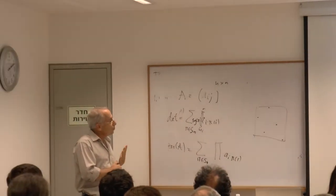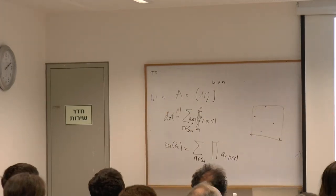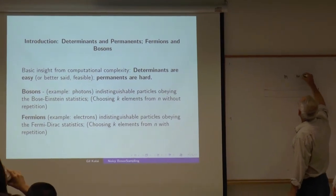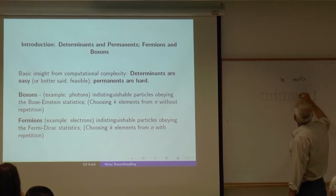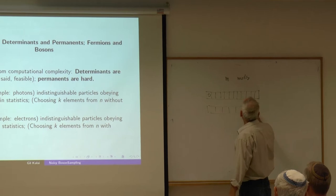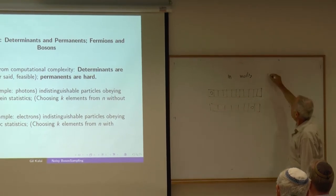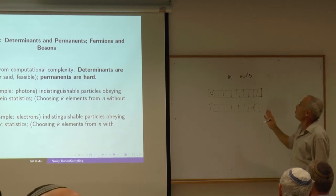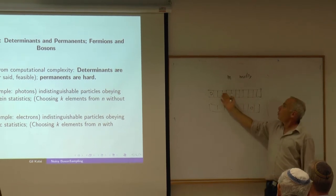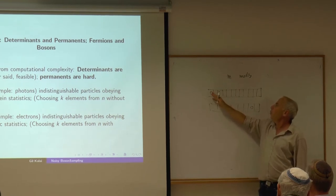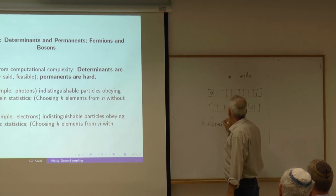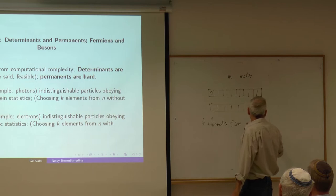A single boson and a single fermion is a particle that can be in M modes — we describe it by looking at M boxes. When we have K bosons, they can occupy K boxes, and many bosons can occupy the same box. The position of the bosons reflects choosing K elements from N elements with repetition.